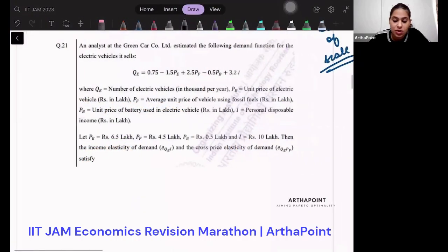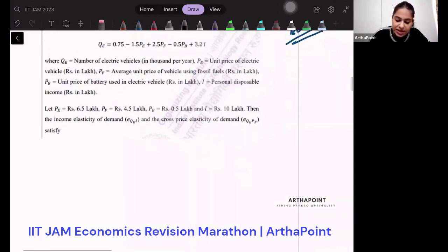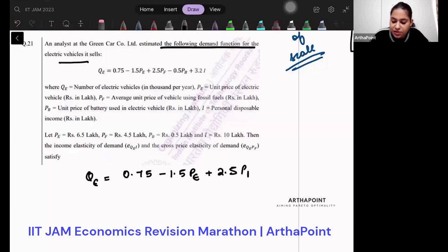Question number 21. This is a question just testing your basic elasticity, if you know what elasticity is or not. So it says that an analyst estimated the following demand function for electric vehicles itself. So QE is equal to 0.75 minus 1.5 PE plus 2.5 PF minus 0.5 PB plus 3.2I.